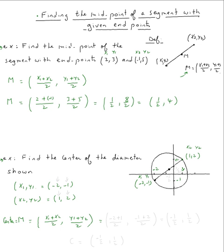Now x1 plus x2 would be negative 2 plus 1 over 2, and then y1 plus y2 would be negative 1 plus 2 over 2.